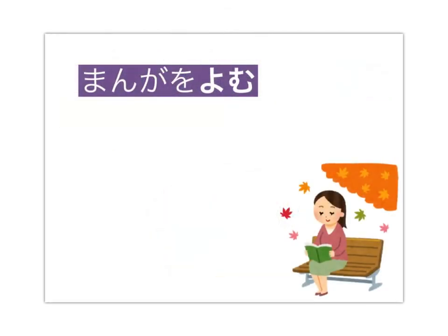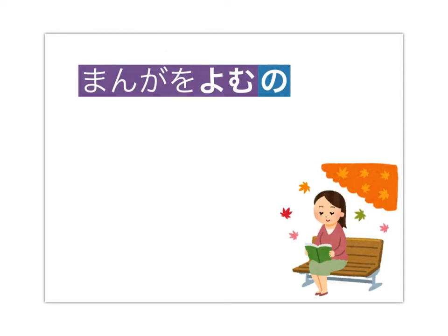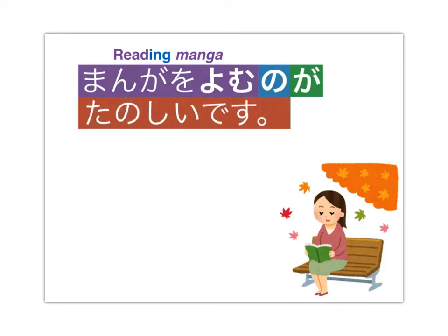And one final example: Manga wo yomu — to read manga. As an action, follow this with no, which changes it into an activity, a noun — reading manga. Add the particle ga and elaborate further: tanoshii desu. Manga wo yomu no ga tanoshii desu: Reading manga is fun, as opposed to drawing manga, for example.